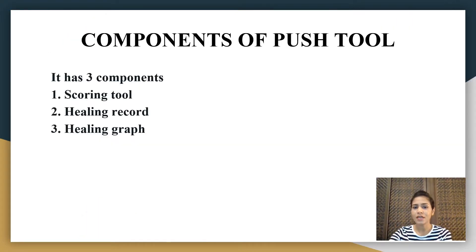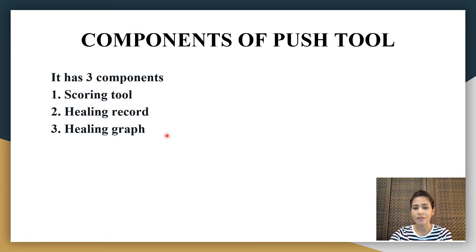Let's see about the components of the PUSH tool. It has three components. The first one is the scoring tool. The second one is the healing record. And the third one is the healing graph. We will see each component in detail in the following slides.